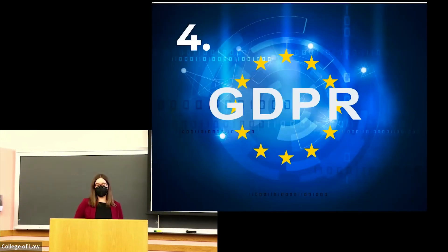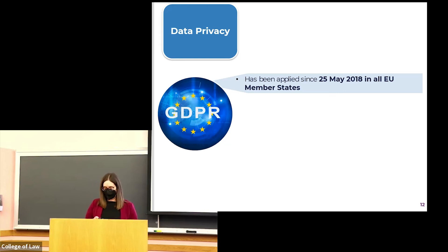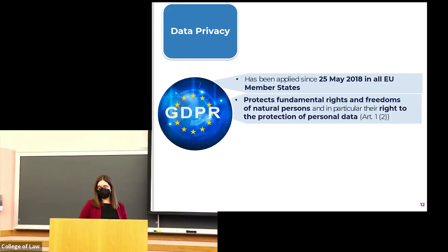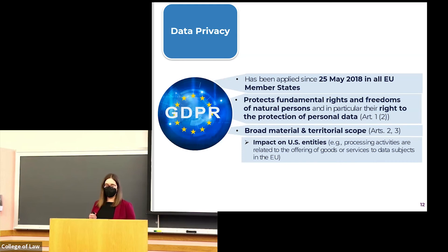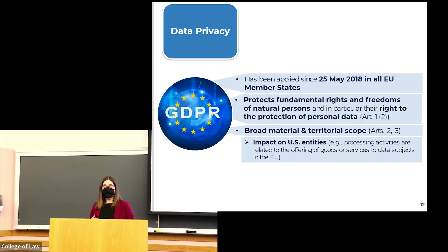This is in contrast to the GDPR in the EU, which has implemented a much more comprehensive regulatory data protection framework. The GDPR has been applied since May 25, 2018 in all EU member states and introduced a new era of data protection. It protects fundamental rights and freedoms of natural persons, in particular their right to protection of personal data. The GDPR is also much broader in its material scope than U.S. HIPAA, applying to all personal data including health data, and has a very wide territorial scope, meaning that U.S. companies may under specific circumstances fall under it. Inspired by the GDPR, some states in the U.S. have recently enacted comprehensive privacy legislation, such as Virginia and California.